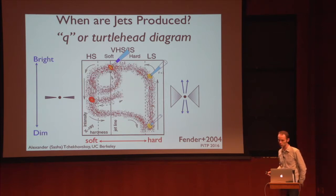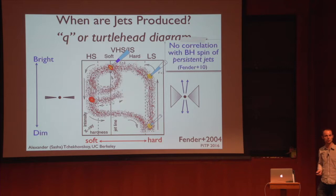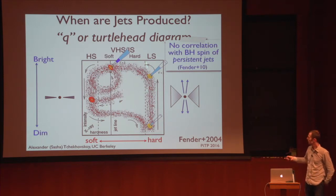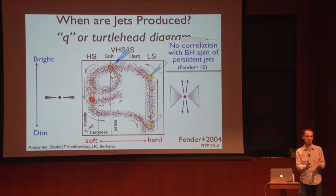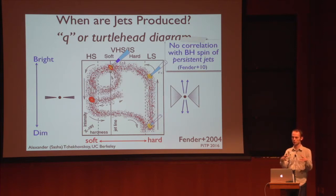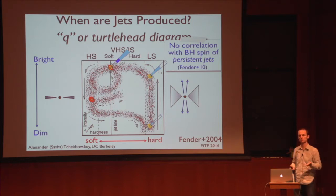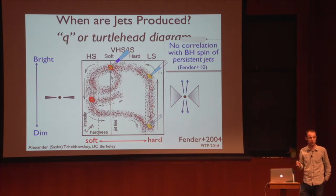An important question is whether the jet gets produced by the black hole or by something else. One way to address that is to ask if there is a correlation between the jet power and the black hole spin. In this hard state, there seems to be no correlation between the jet power and the black hole spin. The jet may be produced by large-scale outflows from the accretion disk. Even if produced by the disk, we would still expect some correlation with spin, because the innermost stable circular orbit — which defines the energetics of the inner disk — does depend sensitively on the spin.